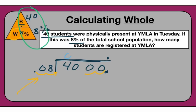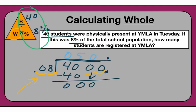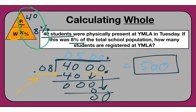8 does not go into 4 since 4 is smaller than 8. But 8 does go into 40 — it goes in evenly 5 times. 8 times 5 is 40, subtract to get 0. Bring down a 0 — 8 can't go into 0, so 8 times 0 gives 0. We zero this out, get another 0, which tells us the answer is 500. That means there are 500 total students enrolled at the school. 40 students were in school on Tuesday, which was 8% — and the answer we were looking for was 500.